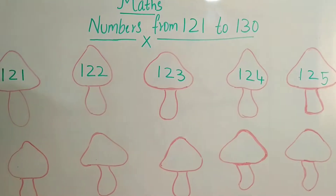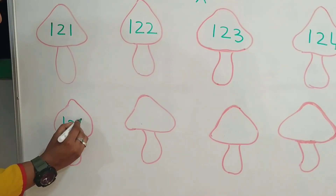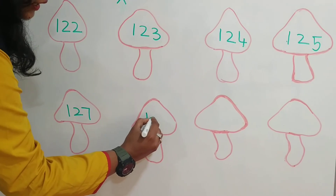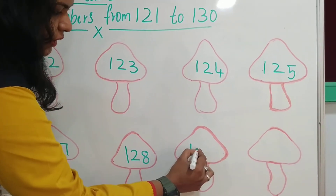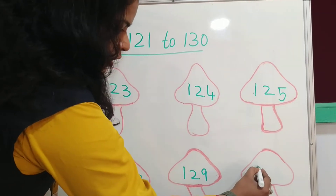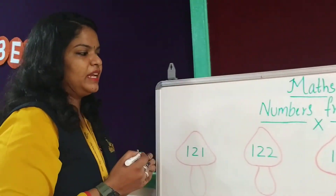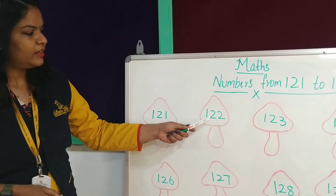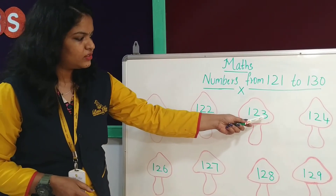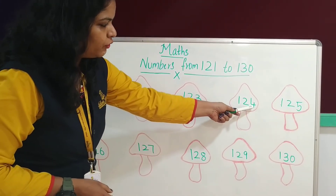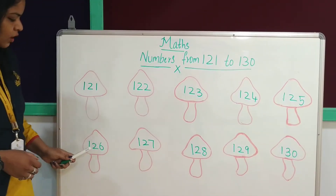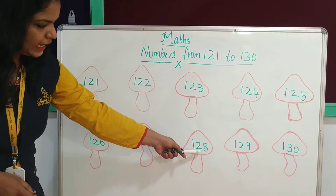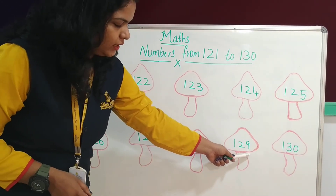Which is the next number? Which is the last number? 125, 126, 127, 128, 129, 130.